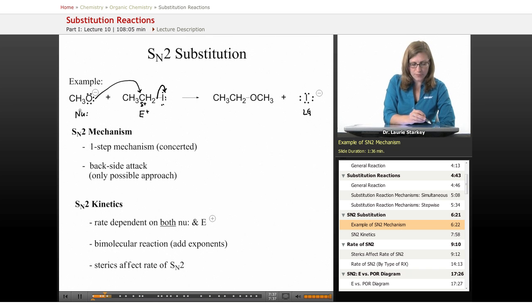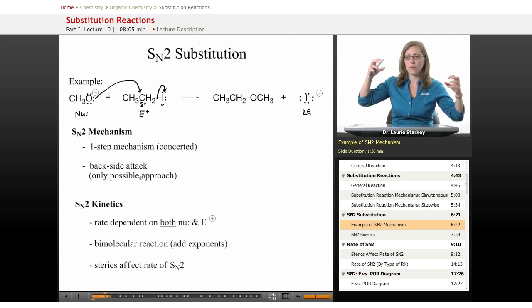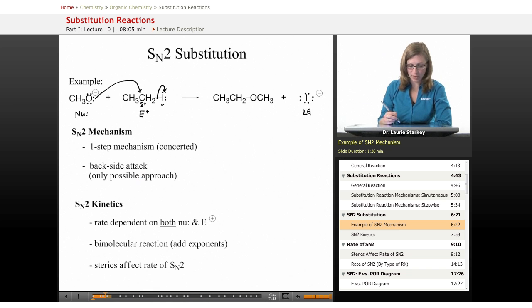The direction of attack of the nucleophile onto the carbon bearing the leaving group is described as backside attack. The nucleophile has to come in from the opposite face of where the leaving group is. That's the only possible attack to get that leaving group to leave and have the orbitals interact properly. We're going to see the consequences of that shortly.